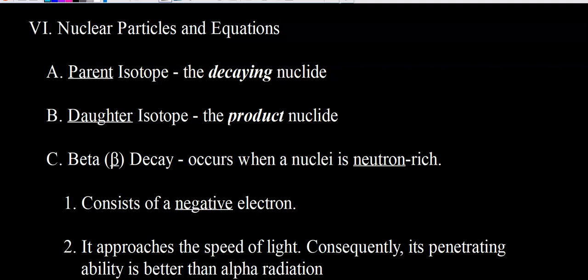Today we're going to talk about nuclear equations. We're going to do so looking at some examples of radioactive decay. Radioactive decay, if you recall, is a spontaneous process that occurs to radioactive substances. The substance undergoing the decay — what we're starting off with — is known as the parent isotope or parent nuclide. What you end up with as a result of the decay process is known as the daughter nuclide or daughter isotope. There are several different ways in which a radioactive substance may decay.